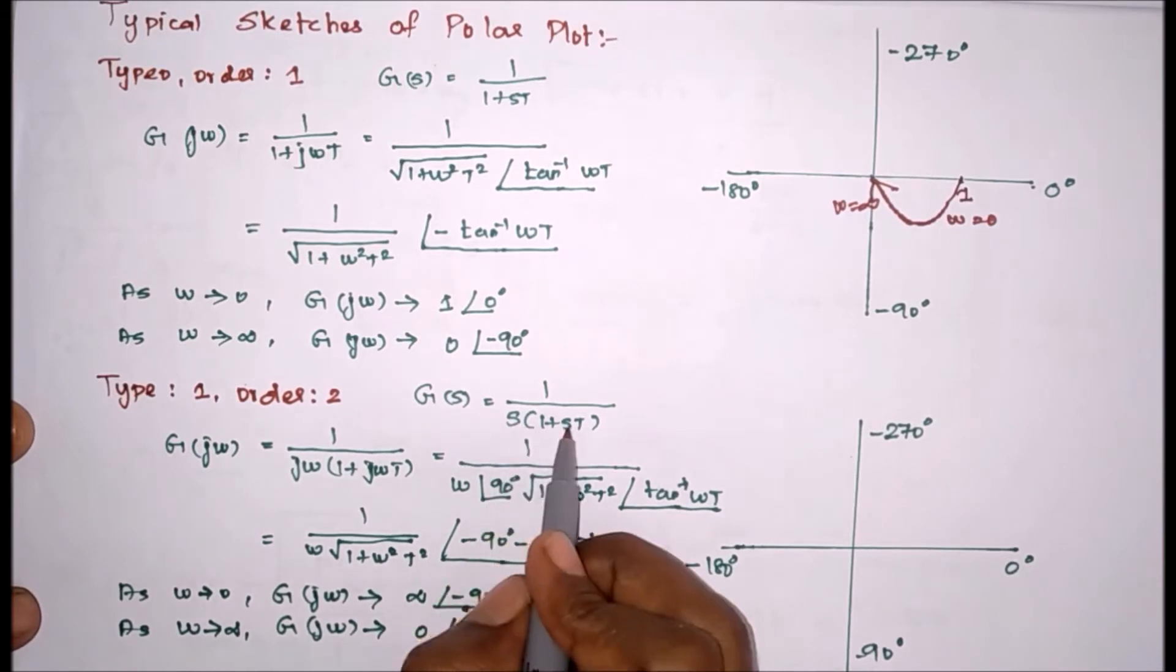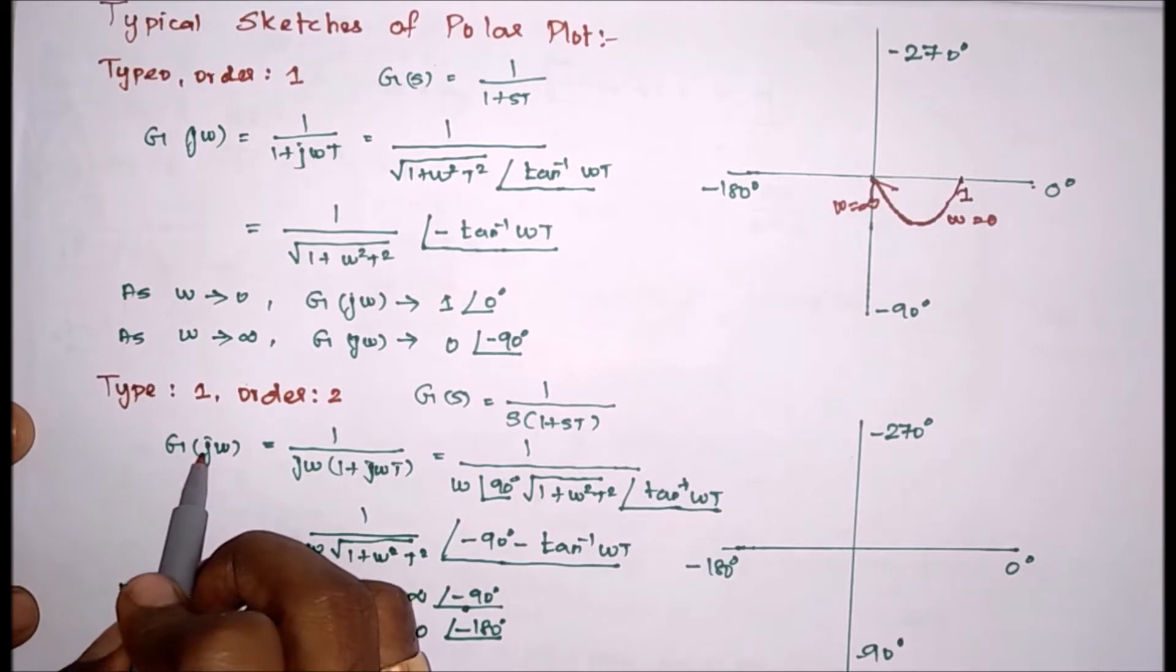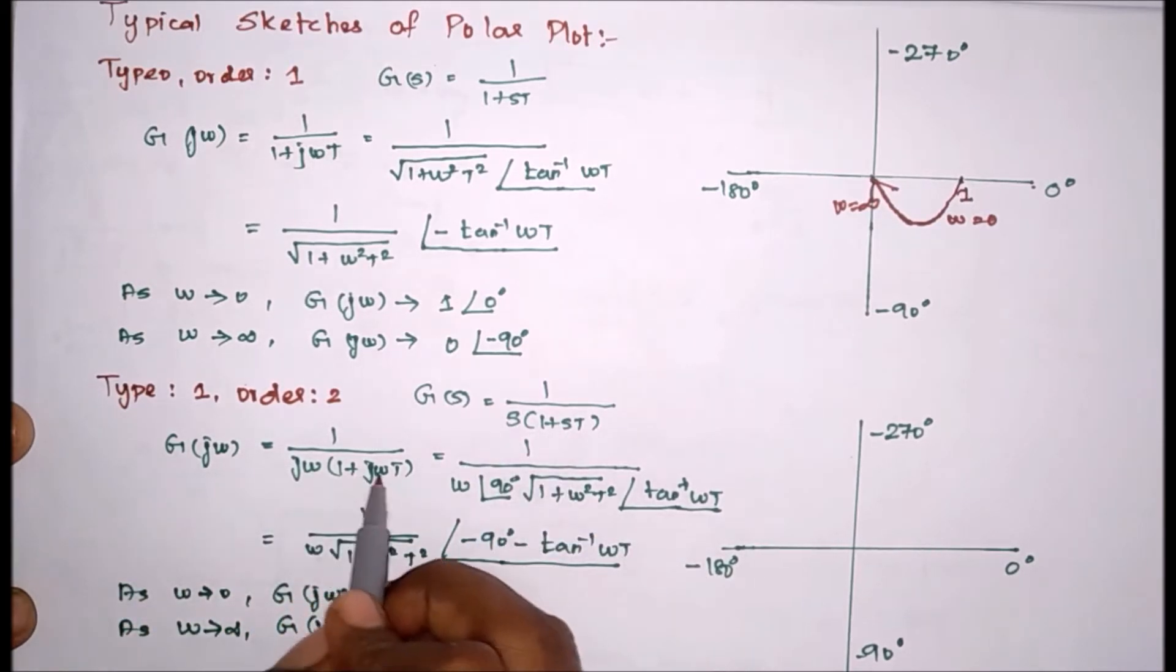So this is type 1 order 2 system. Now as usual, instead of s we have to substitute j omega. We will get j omega then 1 plus j omega t. For this we have to find magnitude and angle separately.